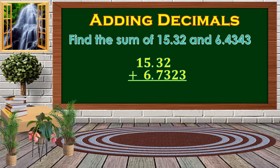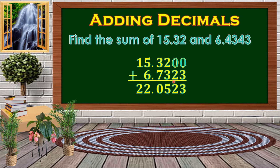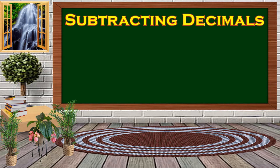Next example: find the sum of 15.32 and 6.4343. Again we align our decimal points. There are vacant decimal places, so we put zeros there — 15.32 is the same as 15.3200. Then we add like whole numbers: 0 plus 3 is 3, 0 plus 2 is 2, 2 plus 3 is 5, 3 plus 7 is 10 so we carry 1, 1 plus 5 is 6, 6 plus 6 is 12 carry 1, and 1 plus 1 is 2.